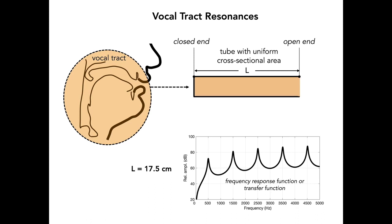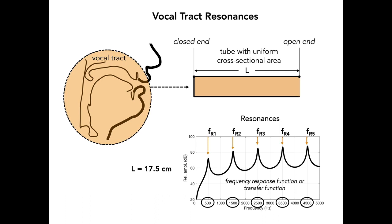The average vocal tract length for an adult male is about 17.5 cm. A closed-open uniform tube of this specific length can be characterized acoustically by the frequency response function shown here. The frequency response function, sometimes called a transfer function, is not a spectrum of a particular sound, but rather indicates the effect that the uniform tube would have on any frequency component of a sound propagating through it. The peaks in the frequency response function correspond to the resonances, or natural frequencies, of the particular tube configuration, and they can be considered the origin of the formant frequencies — that is, the resonances of the vocal tract enhance the amplitudes of particular regions of frequencies.